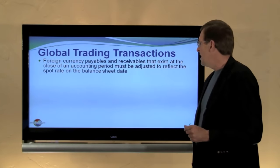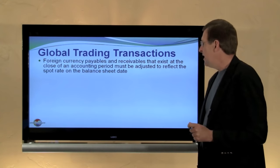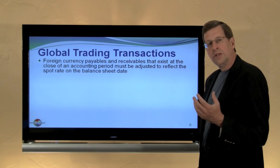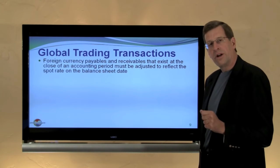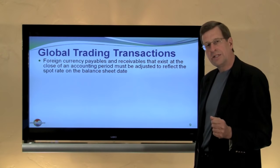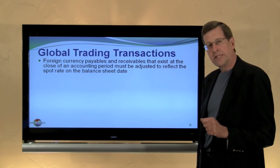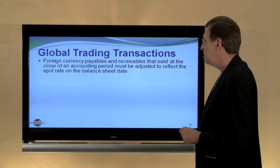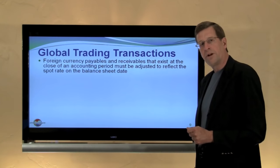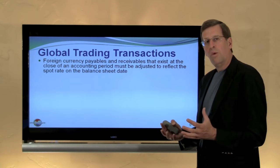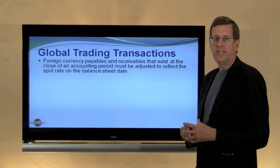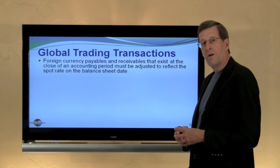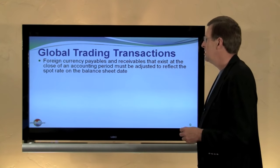Foreign currency payables and receivables that exist at the close of an accounting period must be adjusted to reflect the spot rate on the balance sheet date. Not only do we recognize foreign currency exchange gains and losses concurrent with settling transactions, but to the extent we have outstanding payables or receivables — or are holding foreign currency — at the balance sheet date, we record them at the spot rate on that date in the reporting currency. The changes in values occurring because of that process are recognized in income.